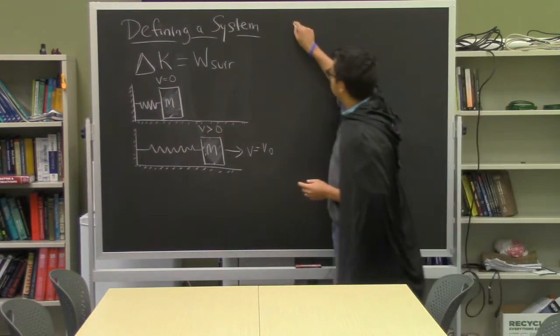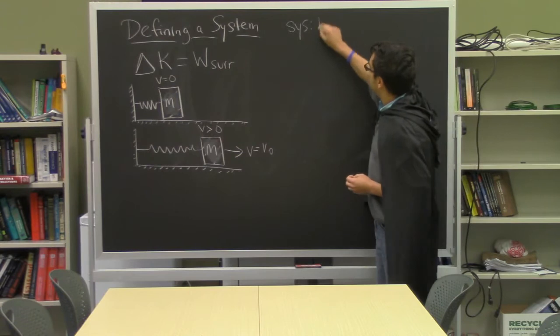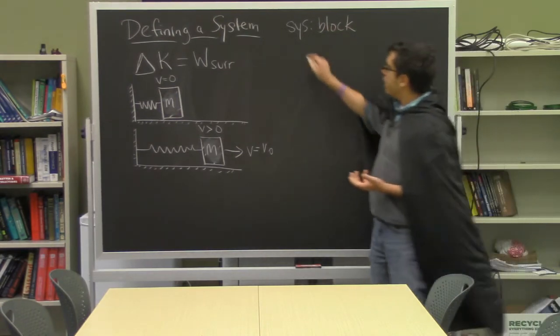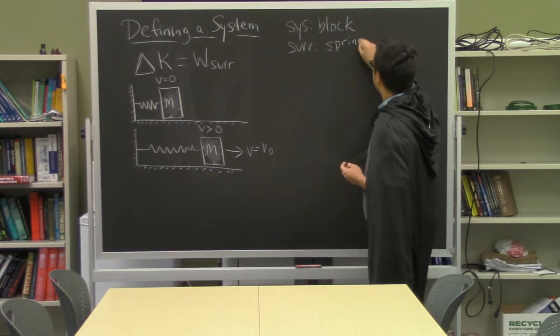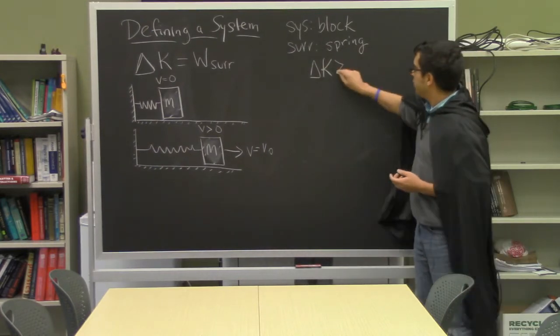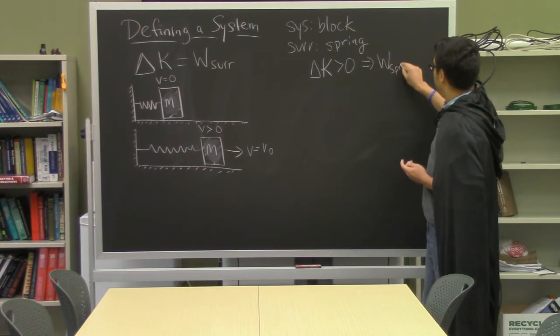Now typically what we've been doing is we've been defining a system to consist of a single particle. So in this case we'll define the system to be the block. If we do that then the surroundings is going to be the spring, and so the change in kinetic energy that we observe, which is positive, is due to positive work done by the spring.